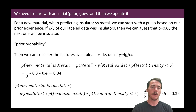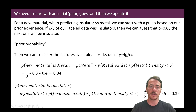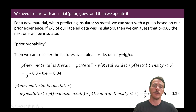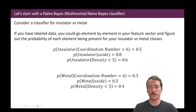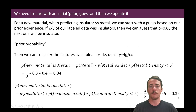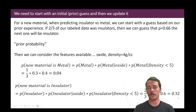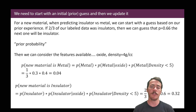Meanwhile, for the insulator: start with the prior of 2/3, multiplied by the likelihood of being an insulator given it's an oxide (0.8) and given it's low density (0.6). That gives 0.32. Comparing the two: the insulator score is 0.32 versus the metal score of 0.04. Given we know it's an oxide and low density, it's much more likely to be an insulator than a metal. This is the naive Bayes classifier.